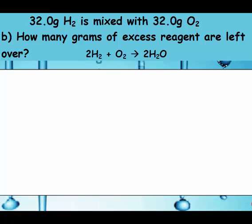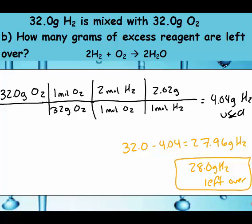Calculate how many grams of the excess reagent are left over. Converting the 32 grams of oxygen to hydrogen, we see that we used 4.04 grams. Remember, we need to subtract that from our starting amount. So 32 minus 4.04 is 27.96, or 28.0 grams of hydrogen left over.